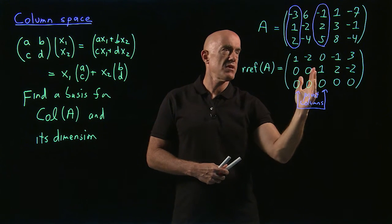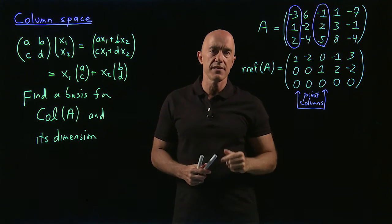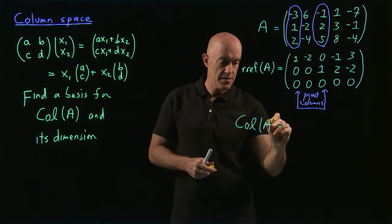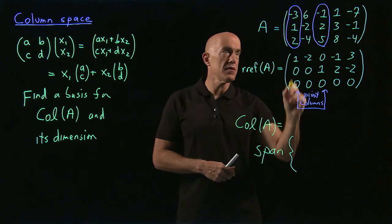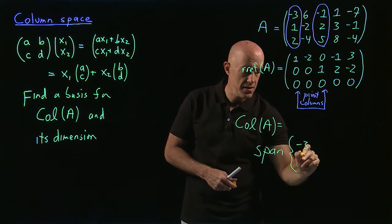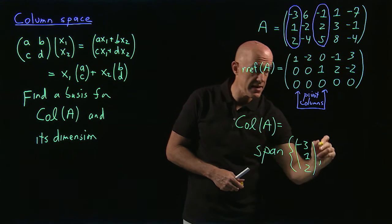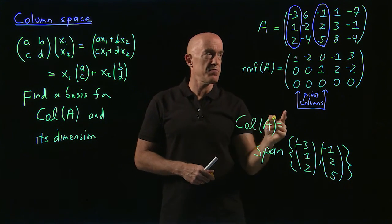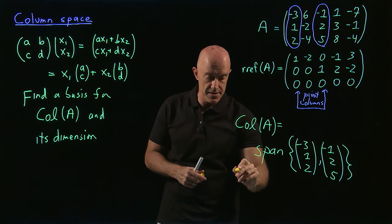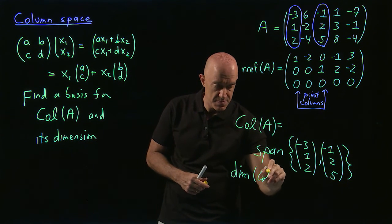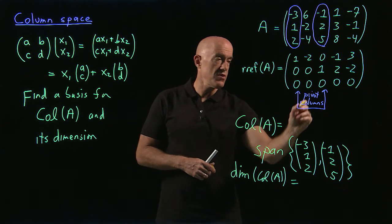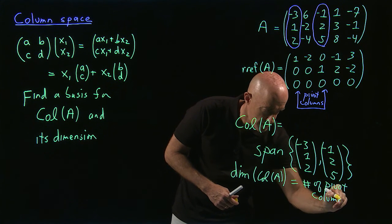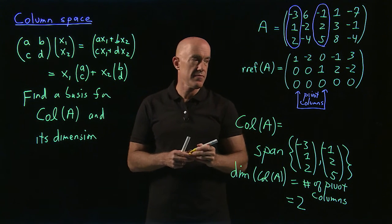So the procedure is to find the reduced row echelon form of A, determine the pivot columns, and then those columns in the original matrix form a basis for the column space. The column space of A is the span of these two basis vectors: minus three, one, two and minus one, two, five. The dimension of the column space of A is equal to the number of pivot columns, and here it's two.